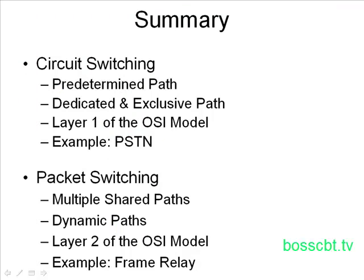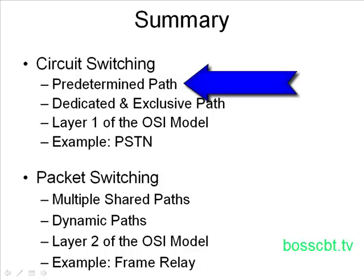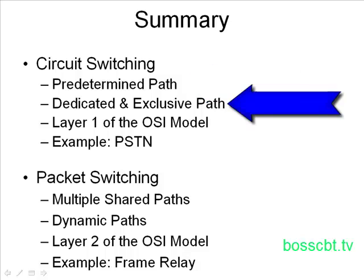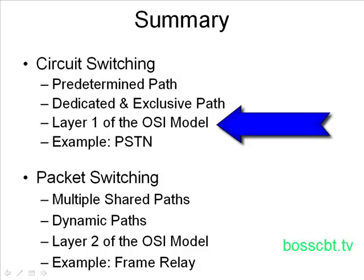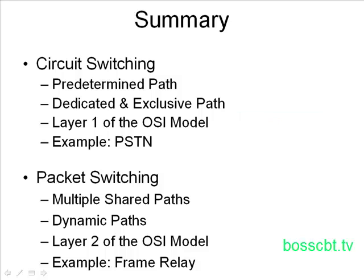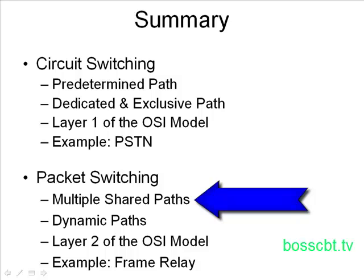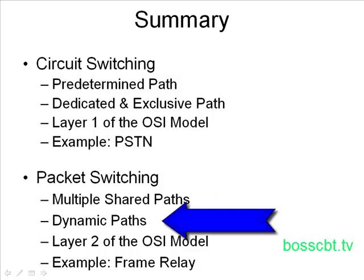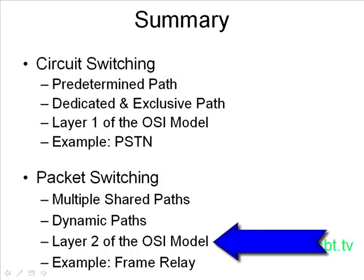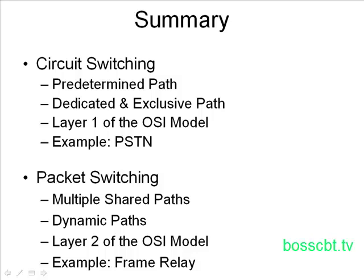To summarize the differences: circuit switching uses a predetermined path before any data is sent between two devices, and the path is dedicated and exclusive to just those two devices — a point-to-point circuit. Circuit switching is implemented in layer one of the OSI model, and a good example is the PSTN. Packet switching, the other very different approach, uses multiple shared paths that are not exclusive and not predetermined — they're dynamic and can change from packet to packet. Packet switching is implemented in layer two of the OSI model, and a good example is Frame Relay.